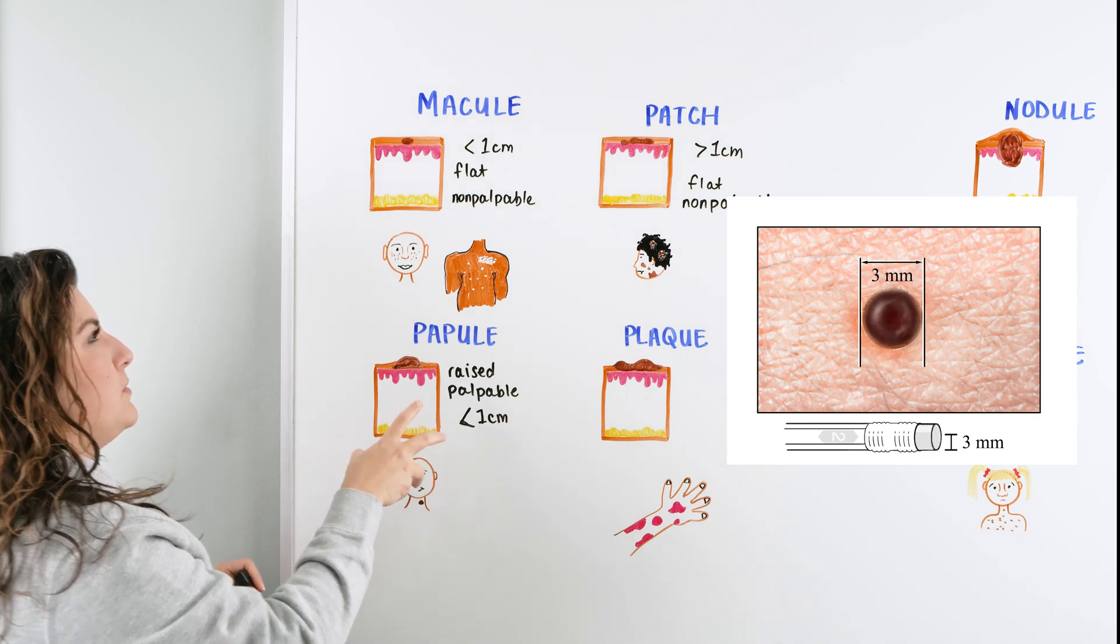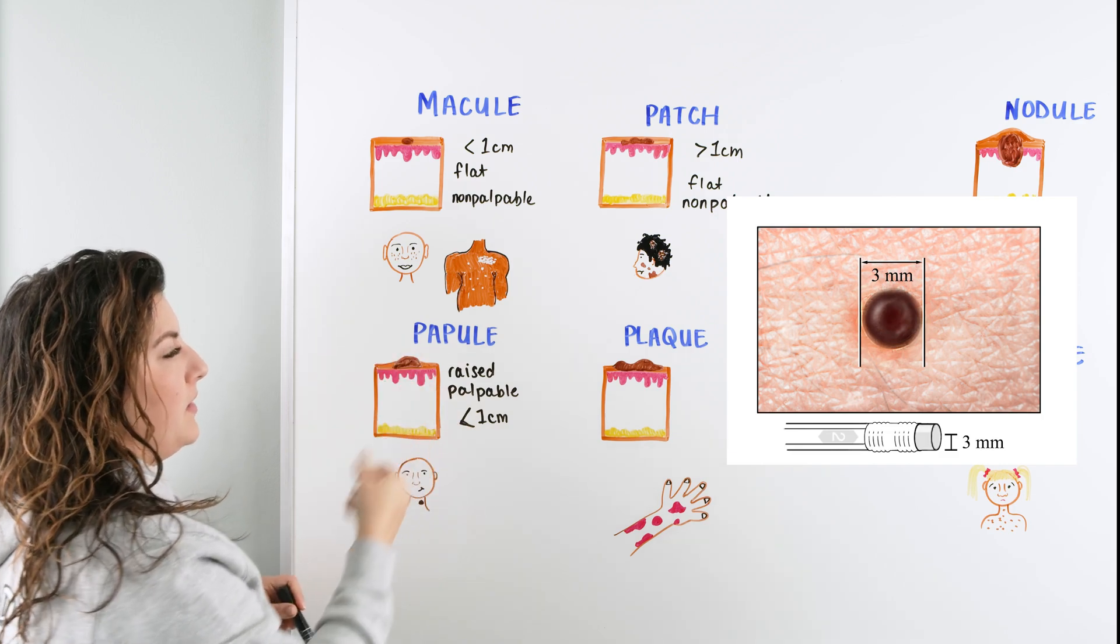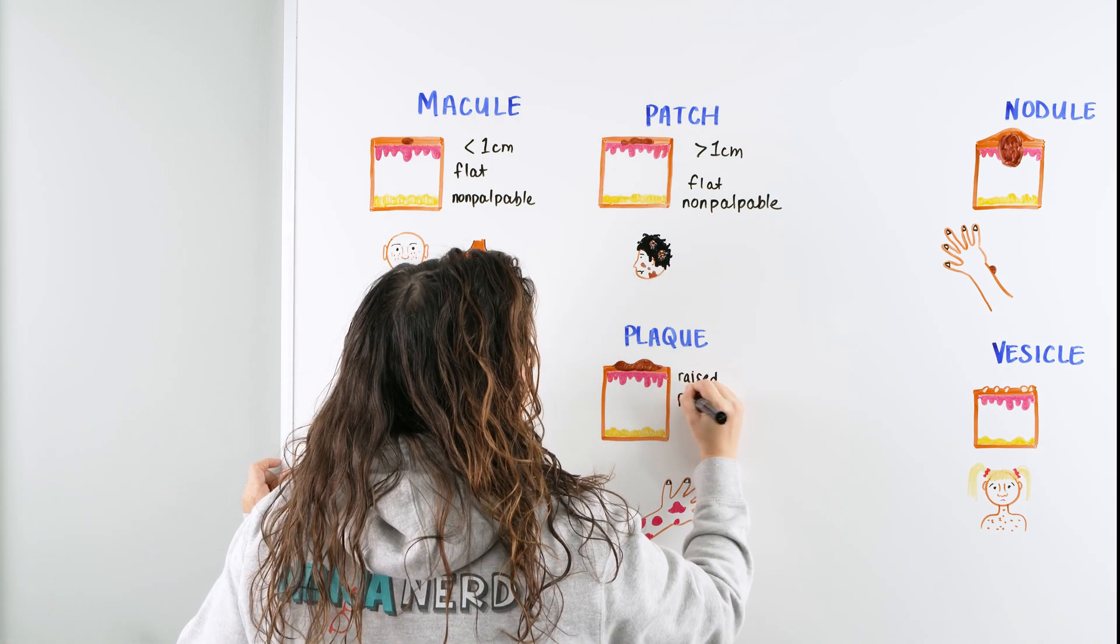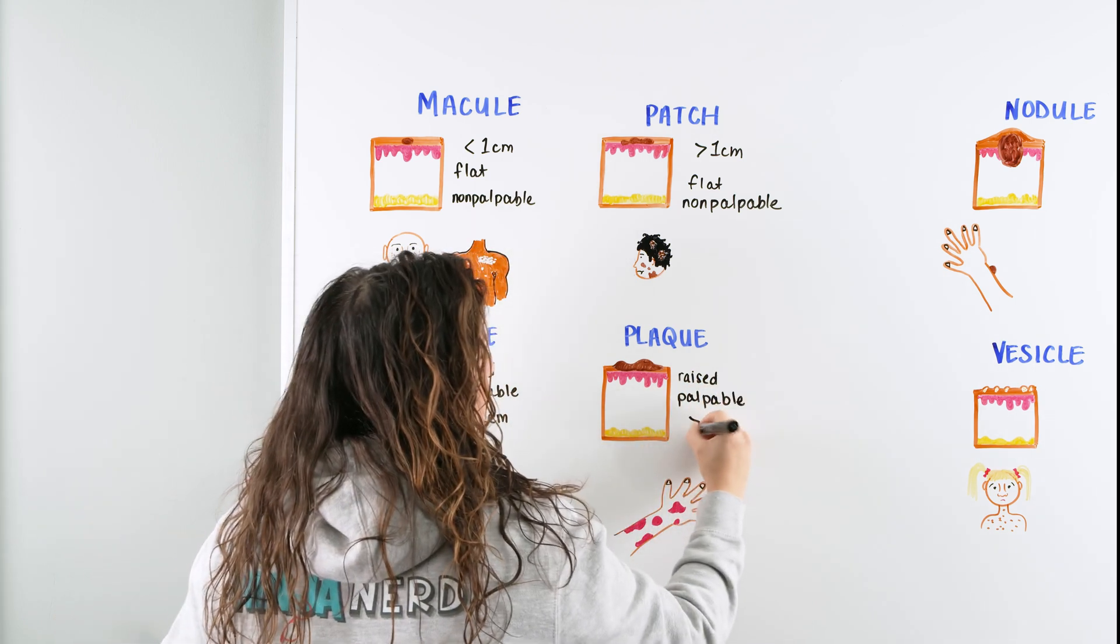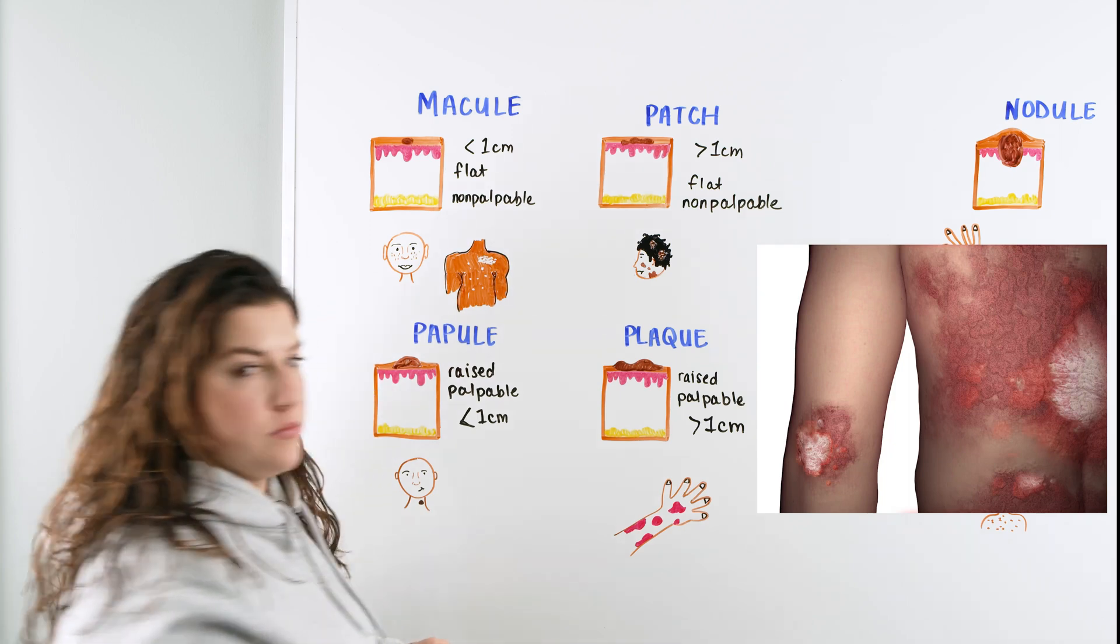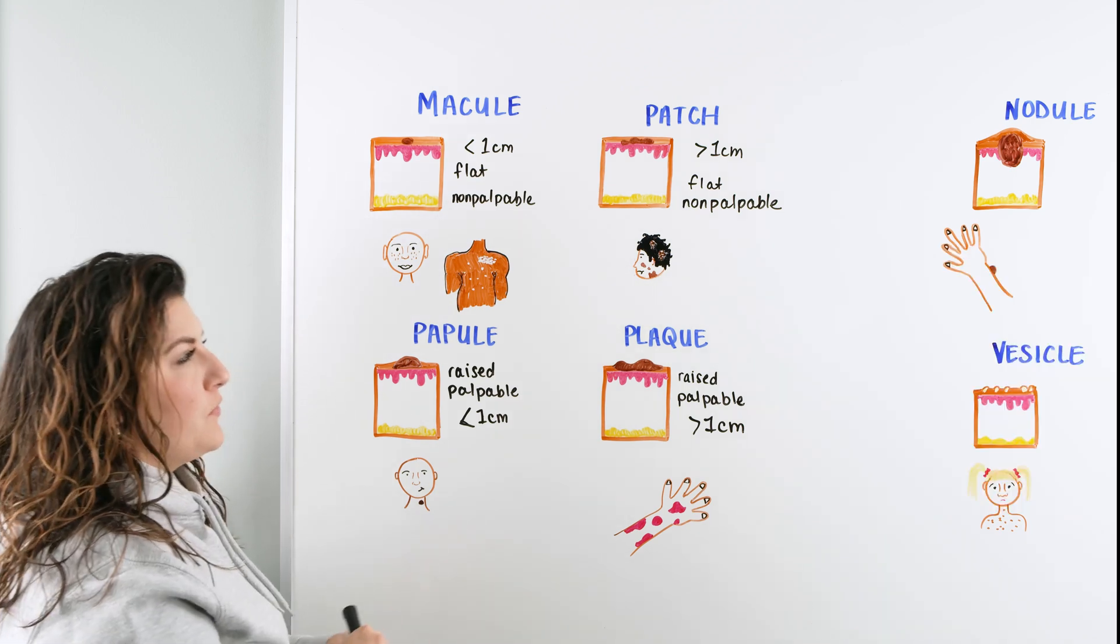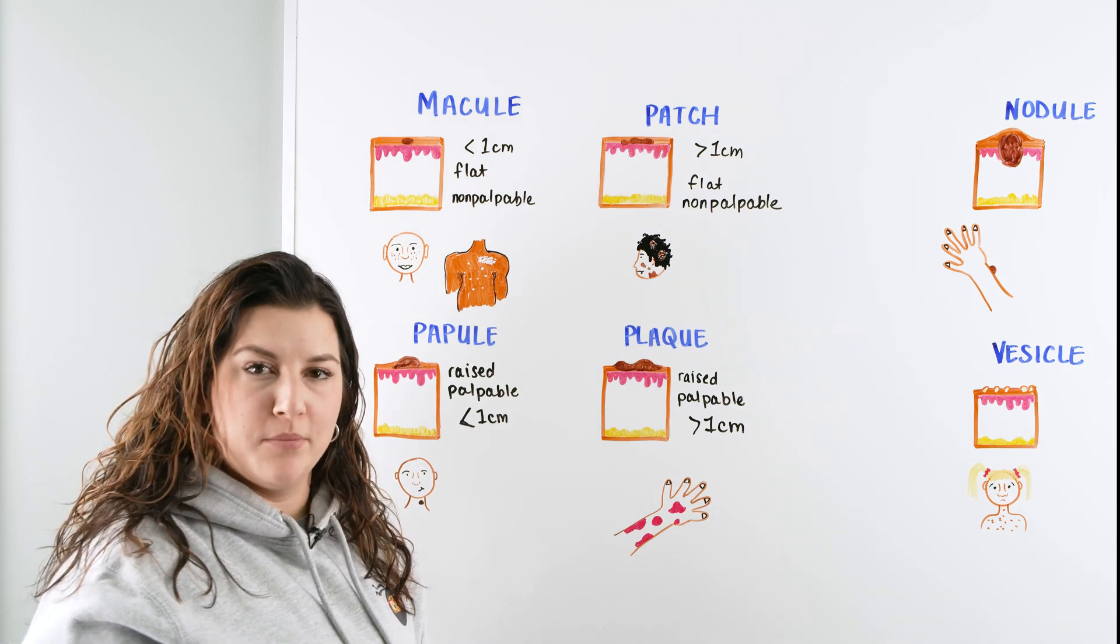That is how you can tell the difference between what might be a freckle versus what might be a mole, is that one's raised and one's not. Going from a papule to a plaque, a plaque is the same thing. It's raised and palpable, but this is then going to be greater than one centimeter. So something else that could be considered a plaque could be psoriasis. We're looking at somebody who has psoriasis in the skin. They have these big raised areas that we can see and feel.